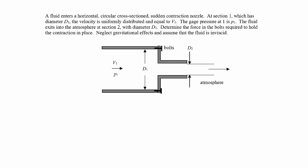In this example, we're told we have fluid entering a horizontal circular cross-section sudden contraction nozzle. You can see it comes in as a cylinder and then suddenly contracts into a smaller diameter cylinder. The velocity is uniformly distributed and equal to v1, so it's a nice uniform flow. The gauge pressure at 1 is p1, and the fluid exits into the atmosphere.